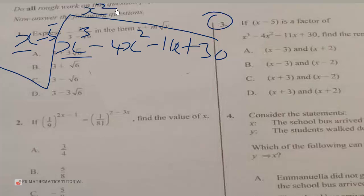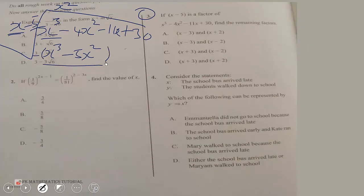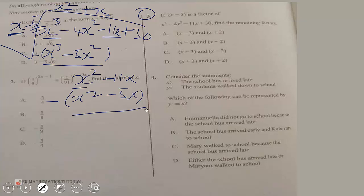Multiplying x squared by (x minus 5) gives x cubed minus 5x squared. Subtracting, x cubed cancels and negative 4x squared minus negative 5x squared gives positive x squared. Bringing down minus 11x, we divide x squared by x to get positive x. Multiplying x by (x minus 5) gives x squared minus 5x. Subtracting leaves negative 6x, and we bring down the 30.